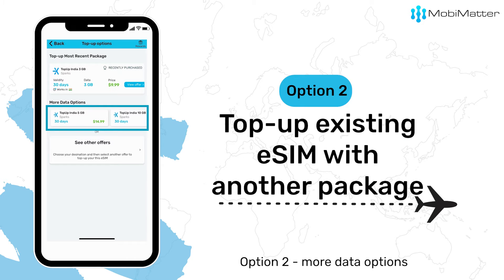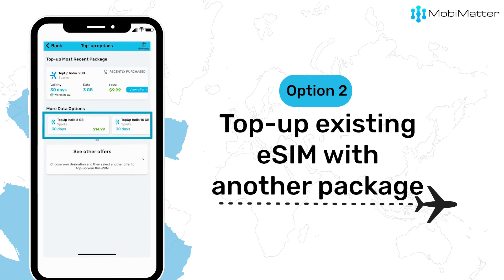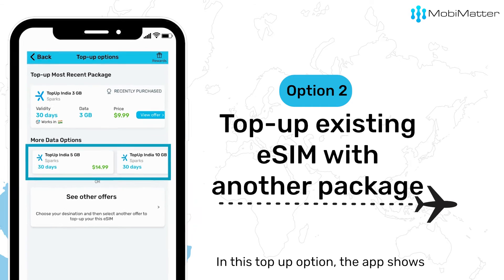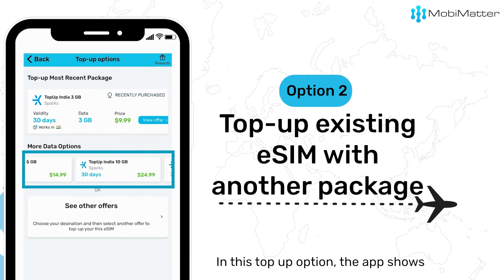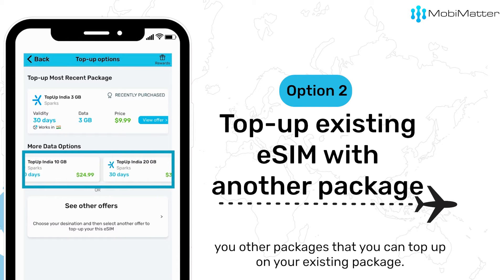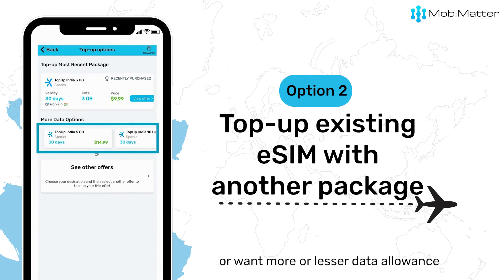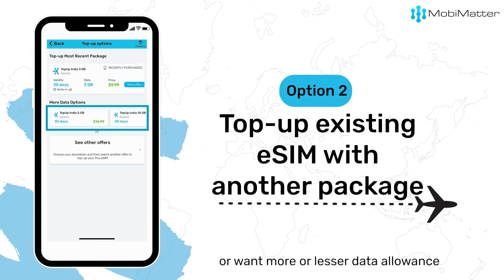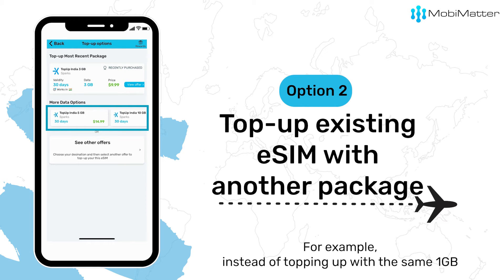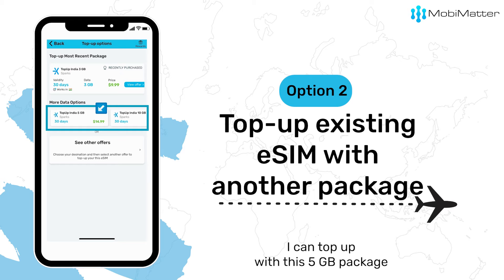Option 2: More Data Options. In this top up option, the app shows you other packages that you can top up on your existing package. This is where you'll choose the eSIM if you're either going to a different destination or want more or lesser data allowance. For example, instead of topping up with the same 1GB, you can top up with a 5GB package.